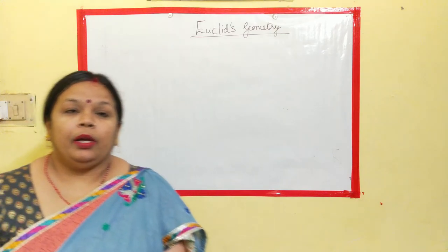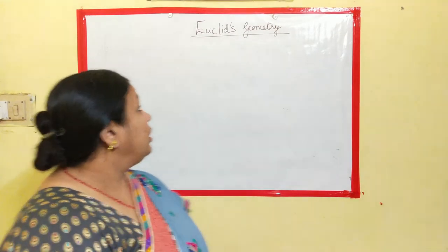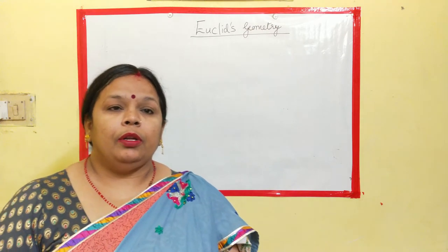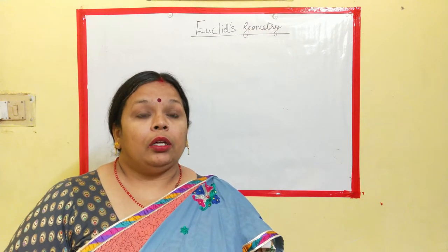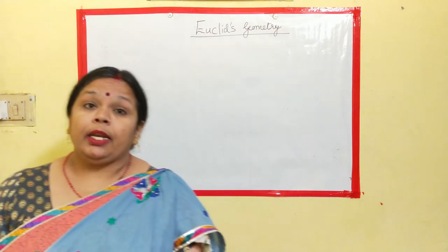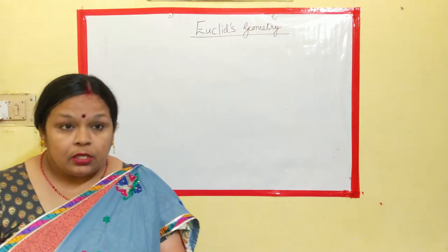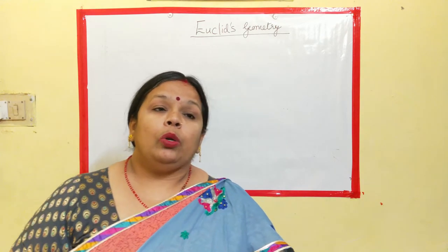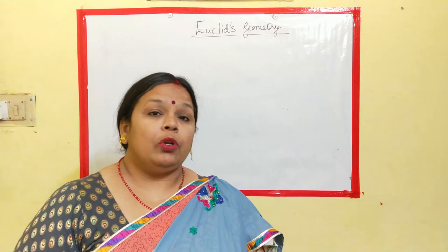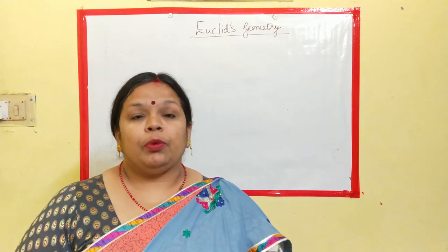Hello students, welcome back to today's session. Hope the previous introductory part of Euclid's geometry was clear. Now to have a short recap of what we have covered in that session, we have learned about the Greek mathematicians and Indian mathematicians, what exactly is Euclid's geometry and how it has been derived, why the necessity of this came in the picture and what were his axioms and postulates. Along with that we have also seen the basic definition of theorem and a few more concepts were discussed there.